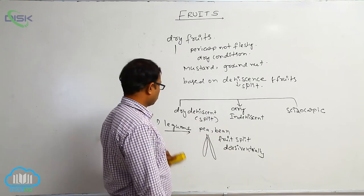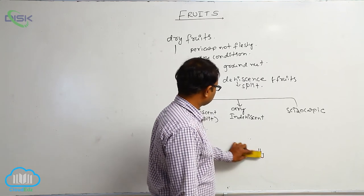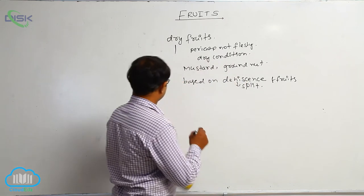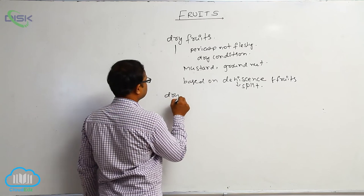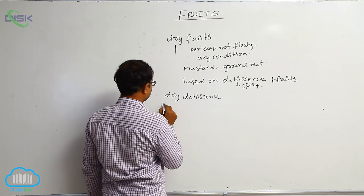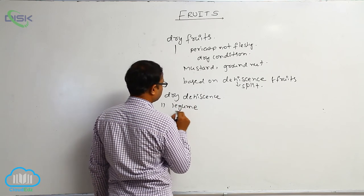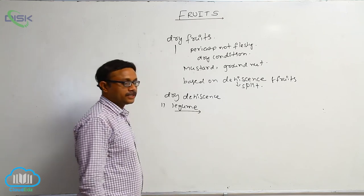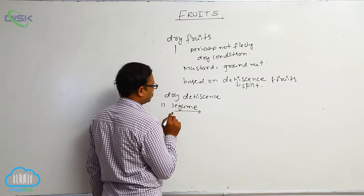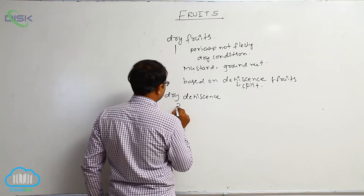So, legume in dry dehiscent fruits is completed. Legume means at the time of maturation, the dry fruit splits dorsi-ventrally, after which seeds are liberated. That is known as a legume. Next, the second one is capsule.